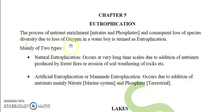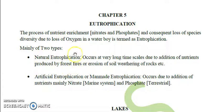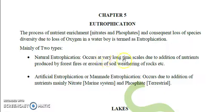Eutrophication can be classified into two types: natural eutrophication and manmade, artificial, or cultural eutrophication. Natural eutrophication occurs over a very long time due to addition of nutrients produced by forest fires, erosion of soil, or weathering of rocks.